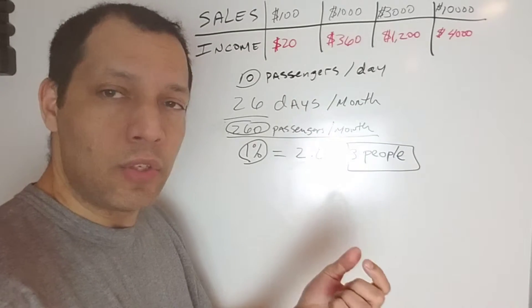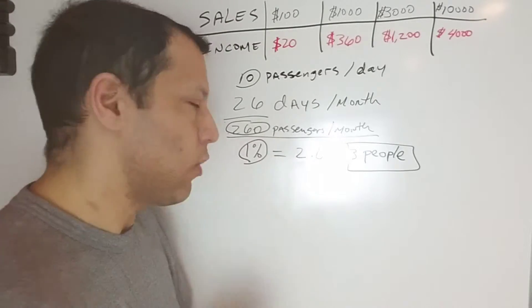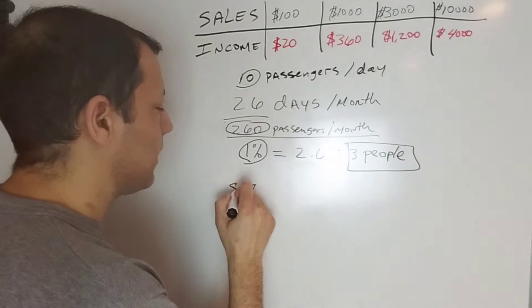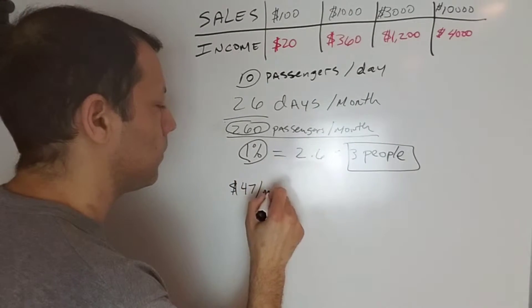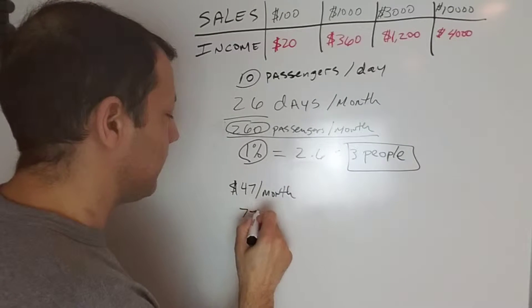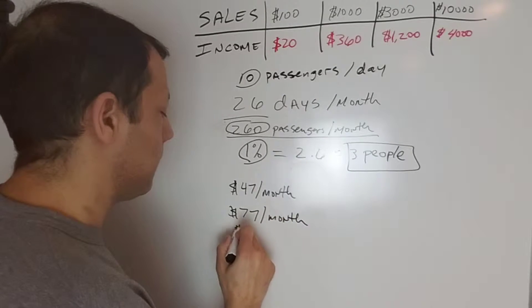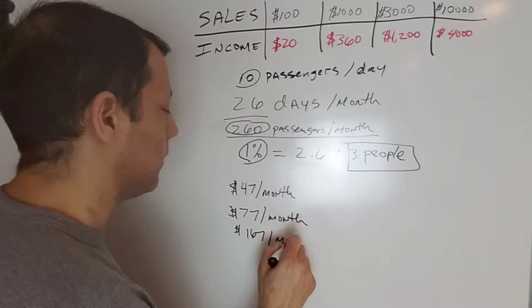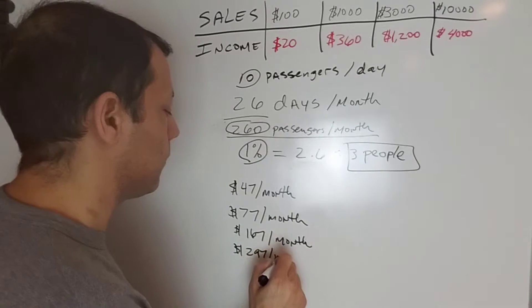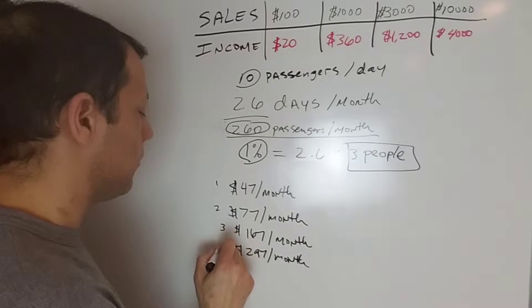In order for people to buy into the solution, they have to subscribe to a plan, and there are four options. Plan number one is $47 a month. Plan number two is $77 a month. Number three is $167 a month. And number four is $297 a month. So there are four subscription options.